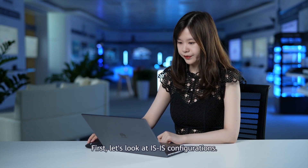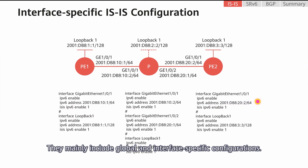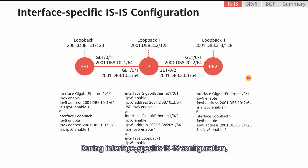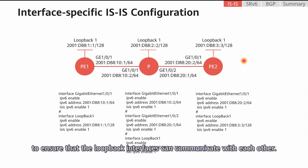First, let's look at IS-IS configurations. In SRv6BE scenarios, IS-IS configurations are almost the same. They mainly include global and interface-specific configurations. During interface-specific IS-IS configurations, you are advised to enable IS-IS IPv6 on the loopback interfaces of PE1 and PE2 to ensure that the loopback interfaces can communicate with each other.